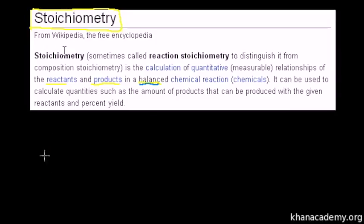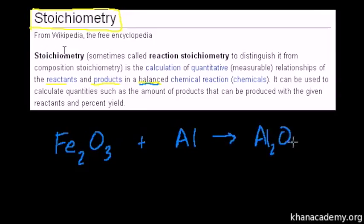I'm going to start with an unbalanced equation so we get practice balancing equations. Let's say we have iron 3 oxide, Fe2O3, plus aluminum, Al, and it yields Al2O3 plus iron. When we're doing stoichiometry, first of all we want balanced equations. It's good practice to actually balance the equations ourselves. So let's try to balance this one.